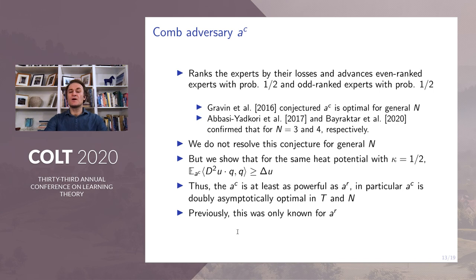Let us now show how our framework applies to the comb adversary that is studied in the literature. This adversary ranks expert-valued losses and assigns even rank experts probability one-half, and odd rank experts with probability one-half. Gravin conjectured that the comb adversary is optimal for general N, and this optimality was confirmed for N equals 3 and N equals 4. While we do not resolve this conjecture for general N, we show that for the heat potential with kappa equals one-half, the expectation of the second derivative with respect to the potential is greater than the Laplacian of the potential.